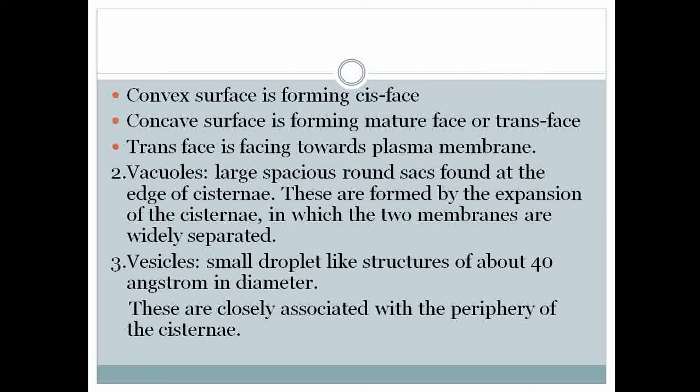The second component is vacuoles. These are large, spacious, round sacs found at the edges of the cisterni. They are rounded, sac-like structures formed by the expansion of the cisterni, in which the two membranes are widely separated.